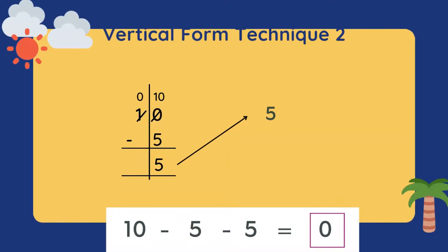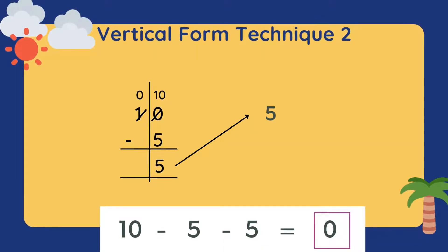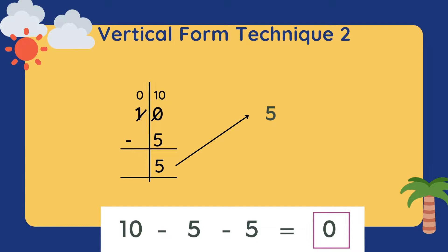Now I'm going to show you vertical form technique number 2. It's quite similar — you write 10 minus 5 and get the answer 5, but you bring the answer to the right by drawing an arrow. Then you write the next short vertical form: 5 minus 5, until you get the answer 0. This is vertical form technique number 2.